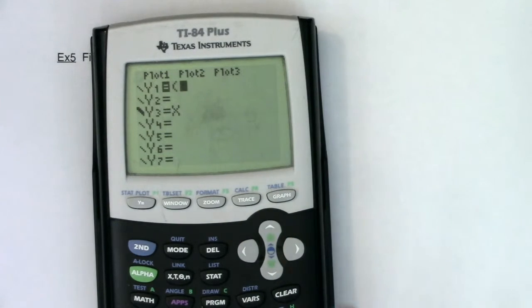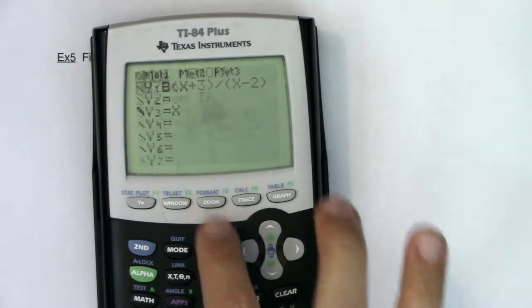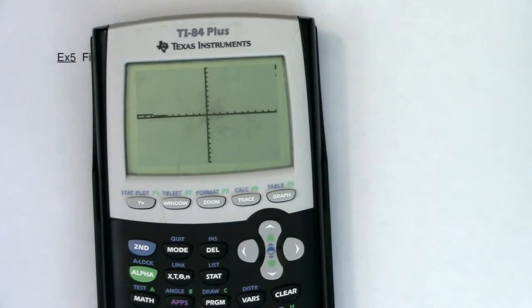And let me put in my original. So we've got x plus 3, I've got a rational function over x minus 2. Alright, so that is a function.